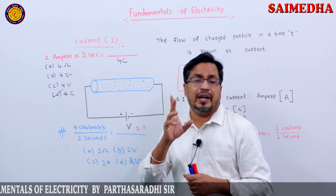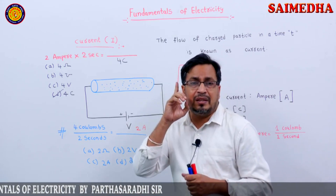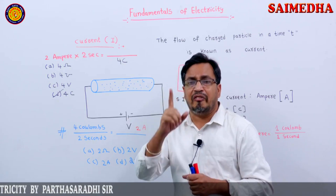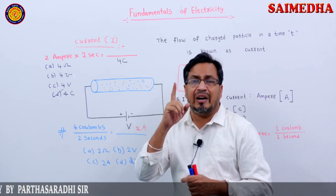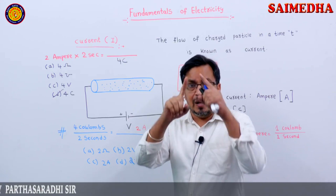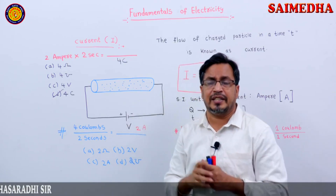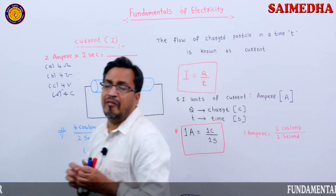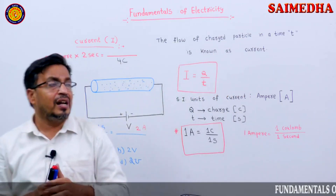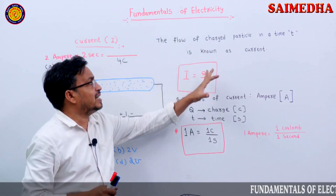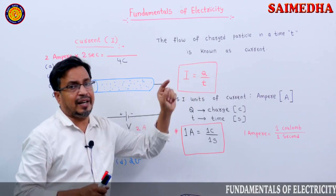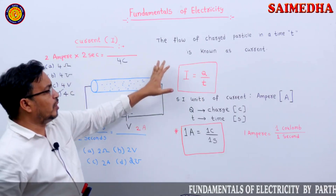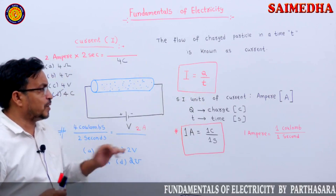My dear students, there is a theoretical relation in every topic. There is a formula. What is the current? The flow of charged particles in a time t is known as current. I equals Q by T.